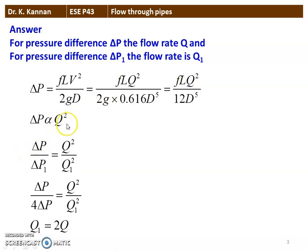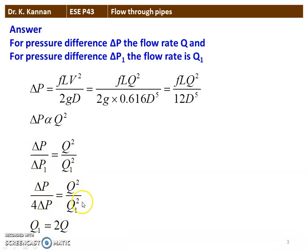Taking the ratio delta P / delta P1: delta P corresponds to Q², and delta P1 equals 4 times delta P corresponds to Q1². Cancelling delta P from both sides gives Q1² = 4Q², so Q1 equals 2 times Q. That is the answer. When the pressure difference increases 4 times, the discharge increases by 2 times.